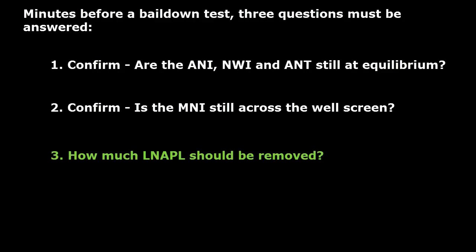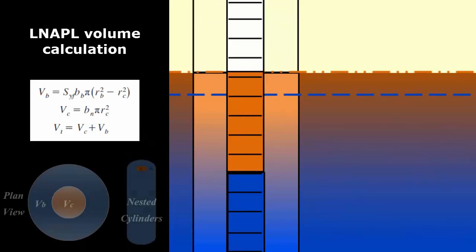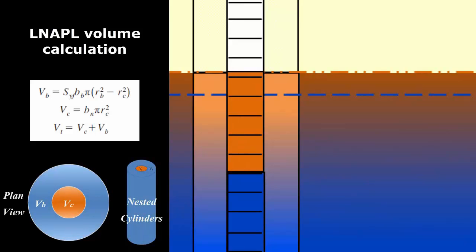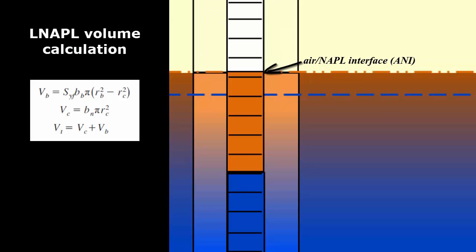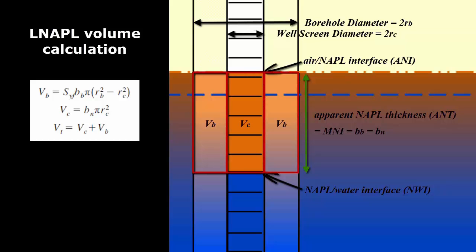How much LNAPL should be removed? Typically, the target LNAPL removal volume is the full volume of mobile LNAPL in the well casing and filter pack. The volume in the well is called the casing volume (V_C), and the volume in the filter pack is called the borehole volume (V_B). These two volumes are calculated using the simple geometry of two nested cylinders, along with a specific yield value for drainable or mobile LNAPL from the filter pack. The cylinder volume equation is V = π × R² × height, where height equals the mobile NAPL interval thickness. The borehole and well casing radii are derived from their respective diameters, and the two volumes are added together to yield the total LNAPL target volume for removal.